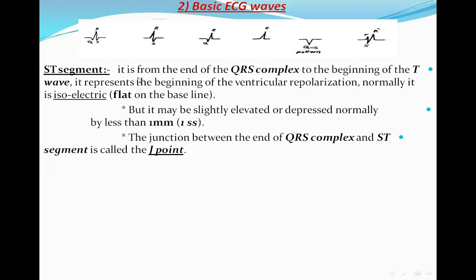The ST segment runs from the end of the QRS complex to the beginning of the T wave. The point where the QRS complex ends and the ST segment begins is called the J point. Note that a segment (like the ST segment or PR segment) does not include waves in its measurements, whereas an interval (like the PR interval) does include waves. Normally, the ST segment should be flat or isoelectric on the baseline, but it may be slightly elevated or depressed — this deviation should not exceed one millimeter or one small square.